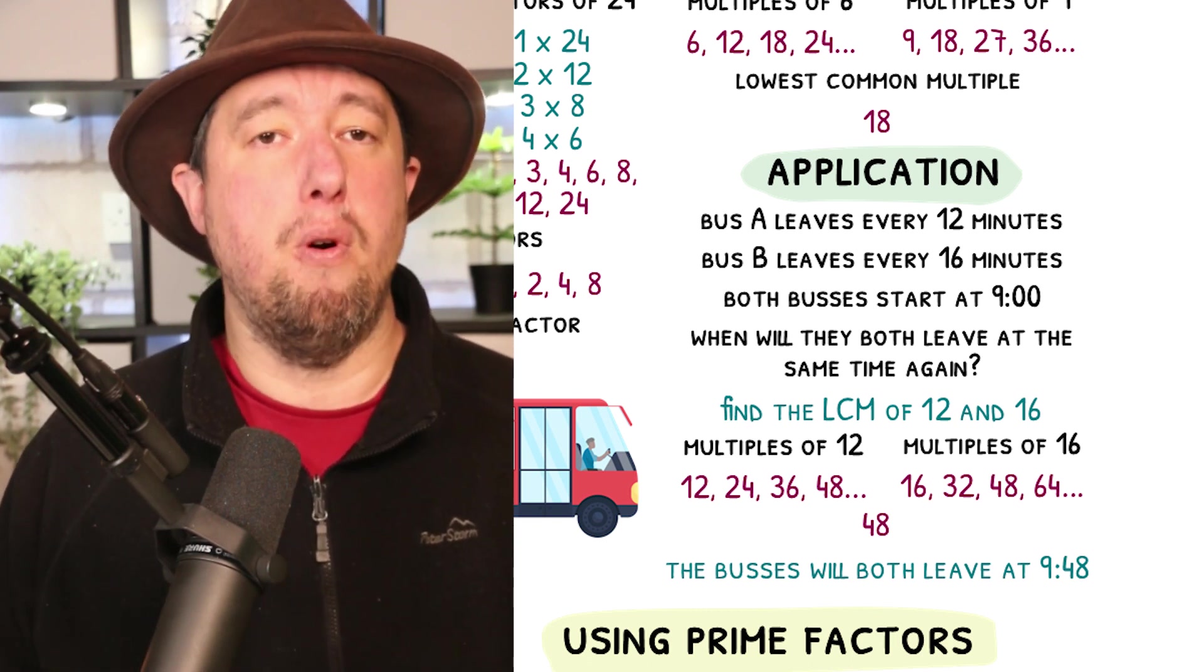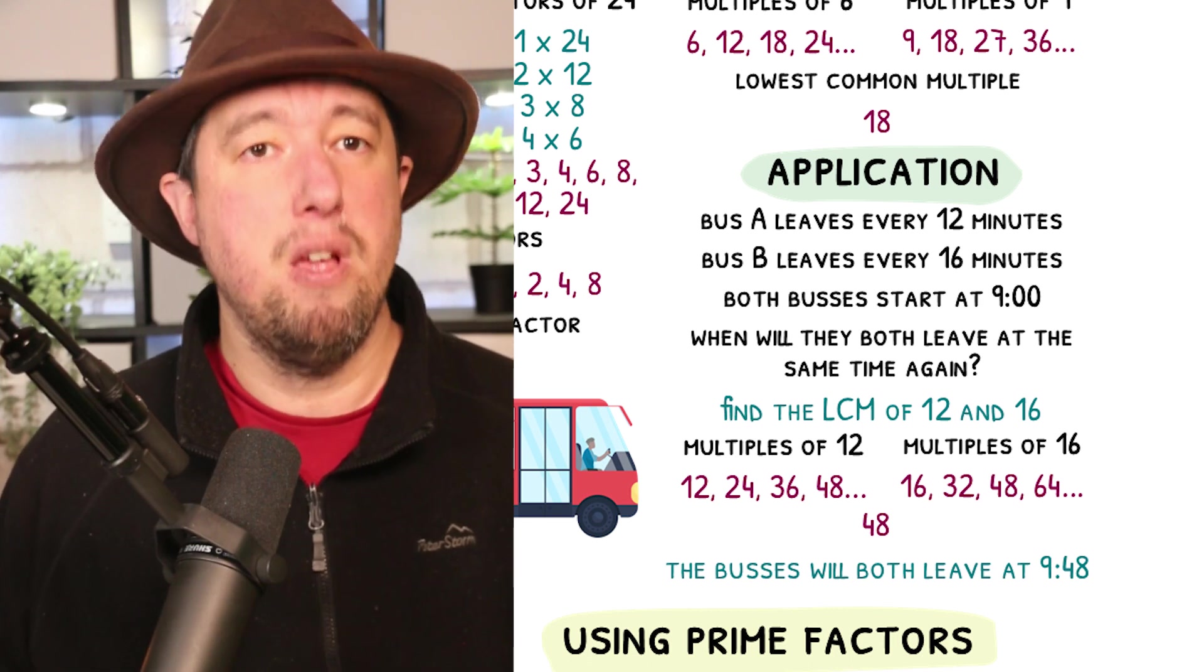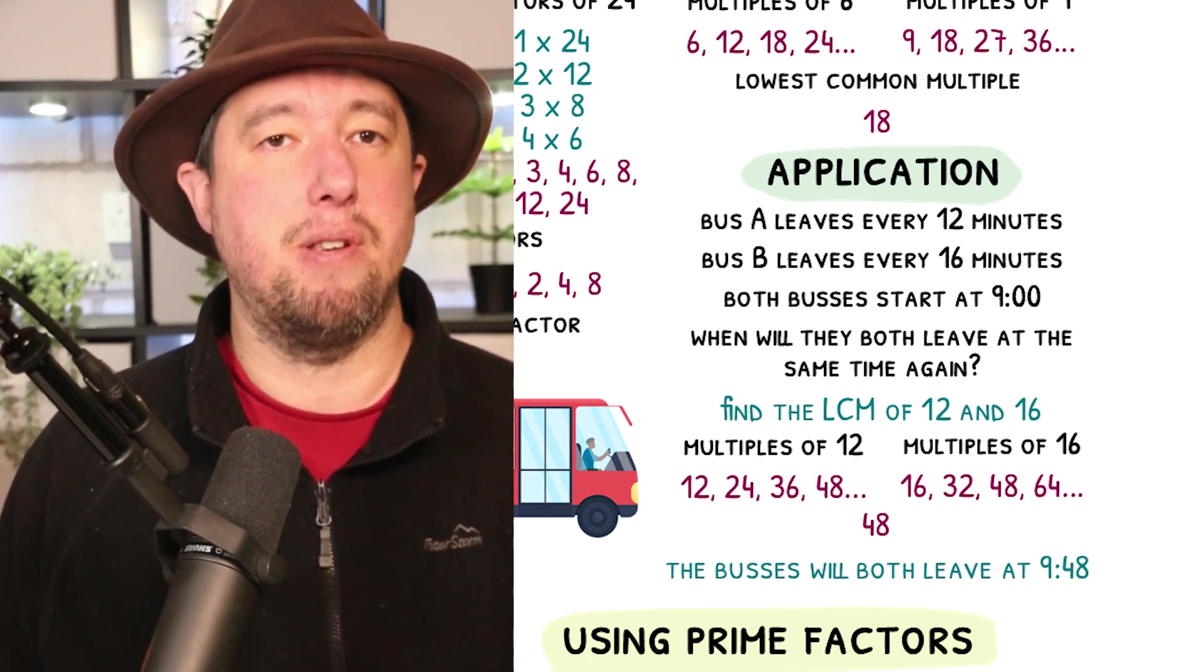The lowest common multiple of 12 and 16 is 48, so every 48 minutes, they will leave at the same time. This will next happen at 9:48.